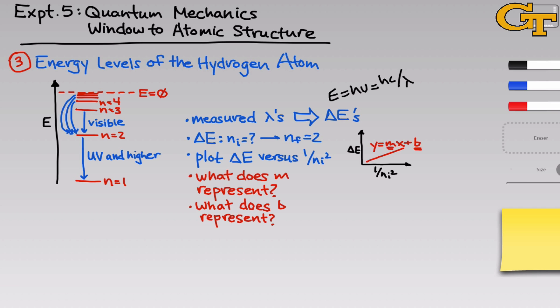And secondly, I want you to think about what b represents. So b is equal to delta E when the x value is equal to 0. And x being equal to 0 for an x axis of 1 over n initial squared implies that n initial is infinite. What's the situation when n initial is infinite? And how does that translate into something that's physically meaningful? This will clue you into the meaning of the y-intercept of this graph.